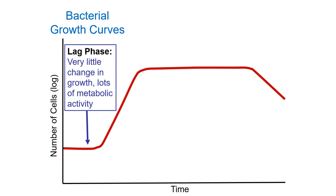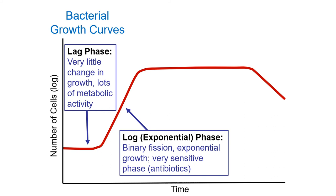The growth curve plots time on the x-axis and number of cells (as a logarithmic function) on the y-axis. Initially, bacteria from a colony have been competing for food, so growth was slow — now they gear up to divide, with lots of metabolic activity but no change in cell number yet. We refer to this as the lag phase. The next phase is the log or exponential phase, where lots of divisions occur as quickly as possible because there are no limits on growth.